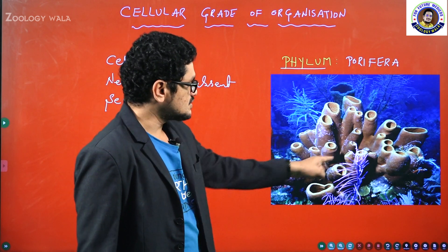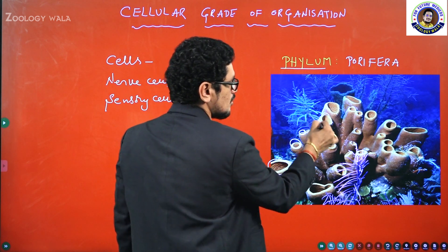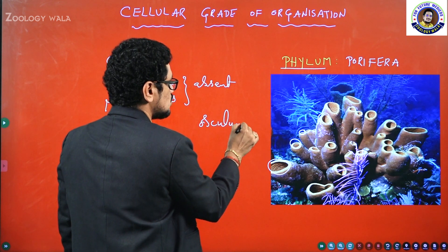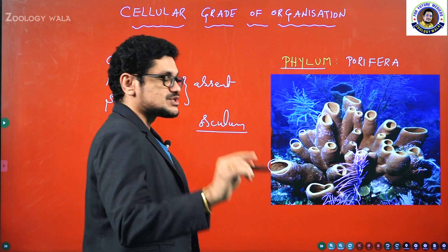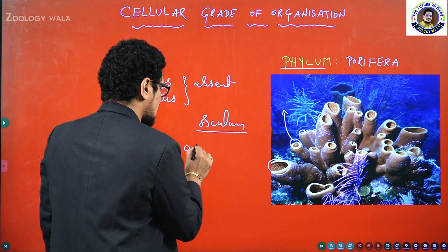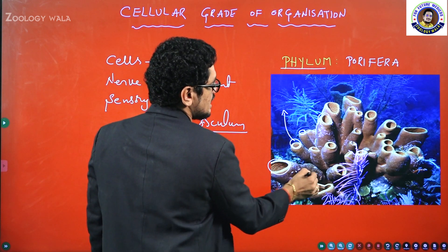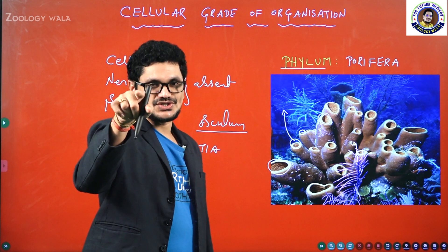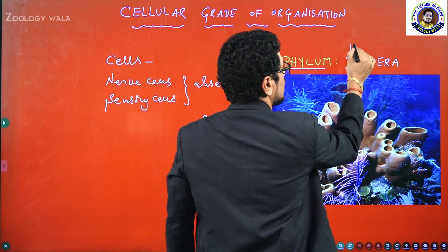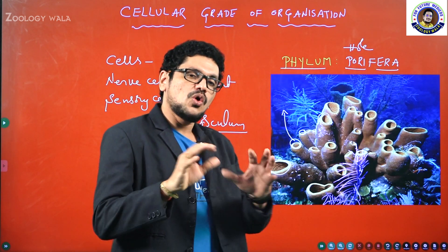In Porifera, you can see a large opening called the osculum — O-S-C-U-L-U-M. The osculum is the large opening through which substances, including water, will come out. Ostia are the numerous openings present on the surface of the body — ostia are nothing but pores or holes. That is the reason why it is called Porifera: 'pori' means hole, and 'fera' means bearing or having — hole-bearing animals.